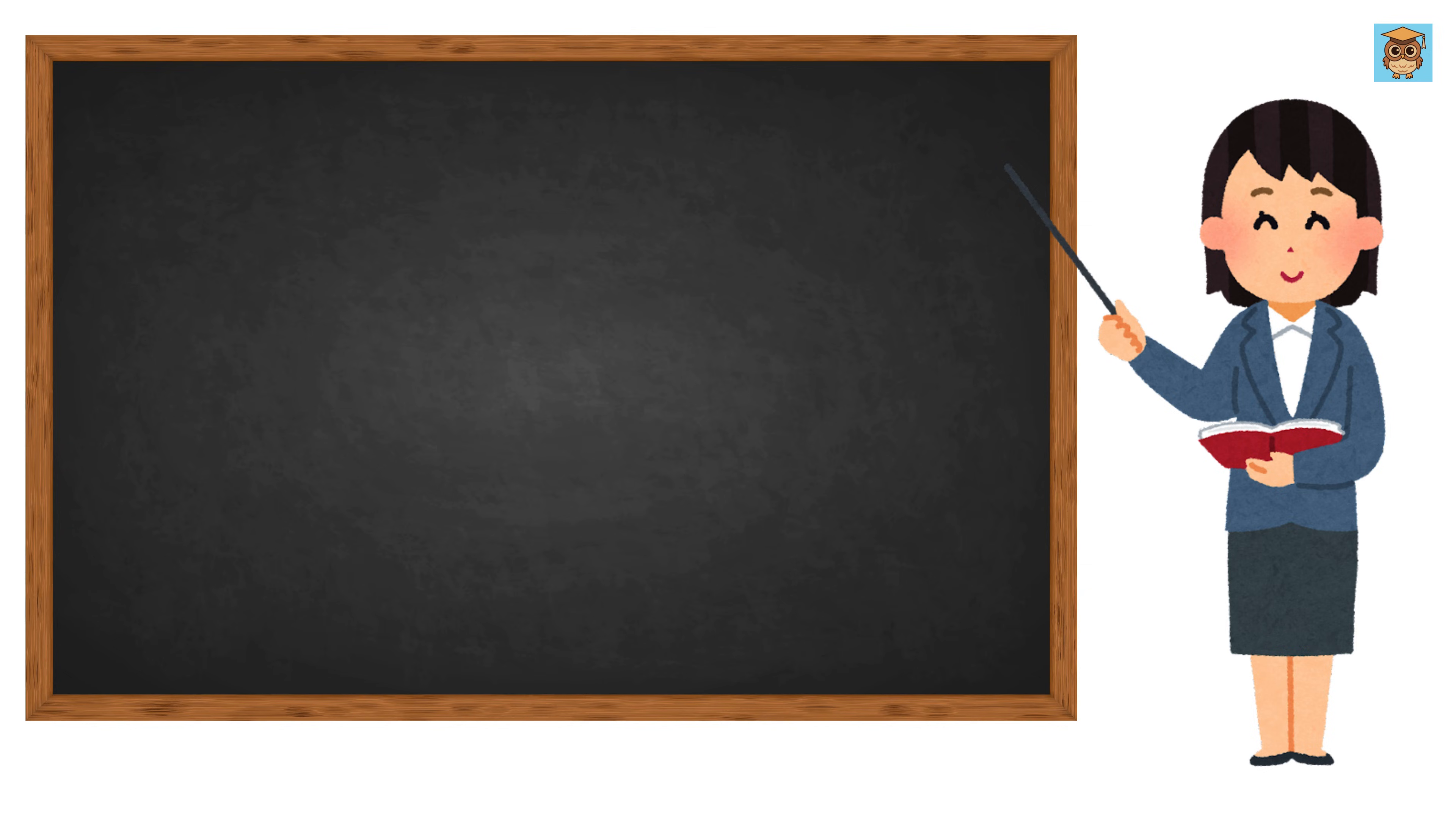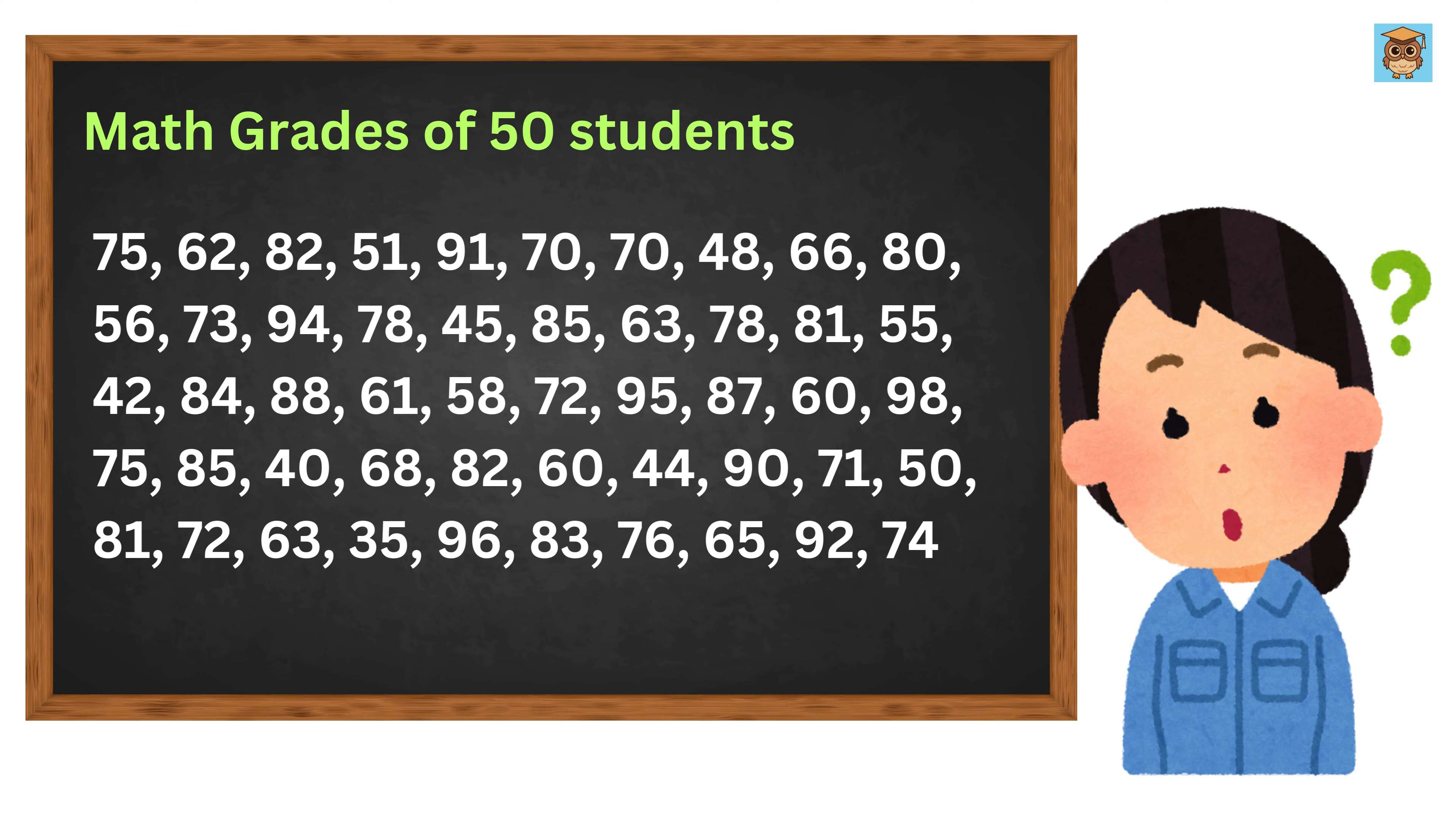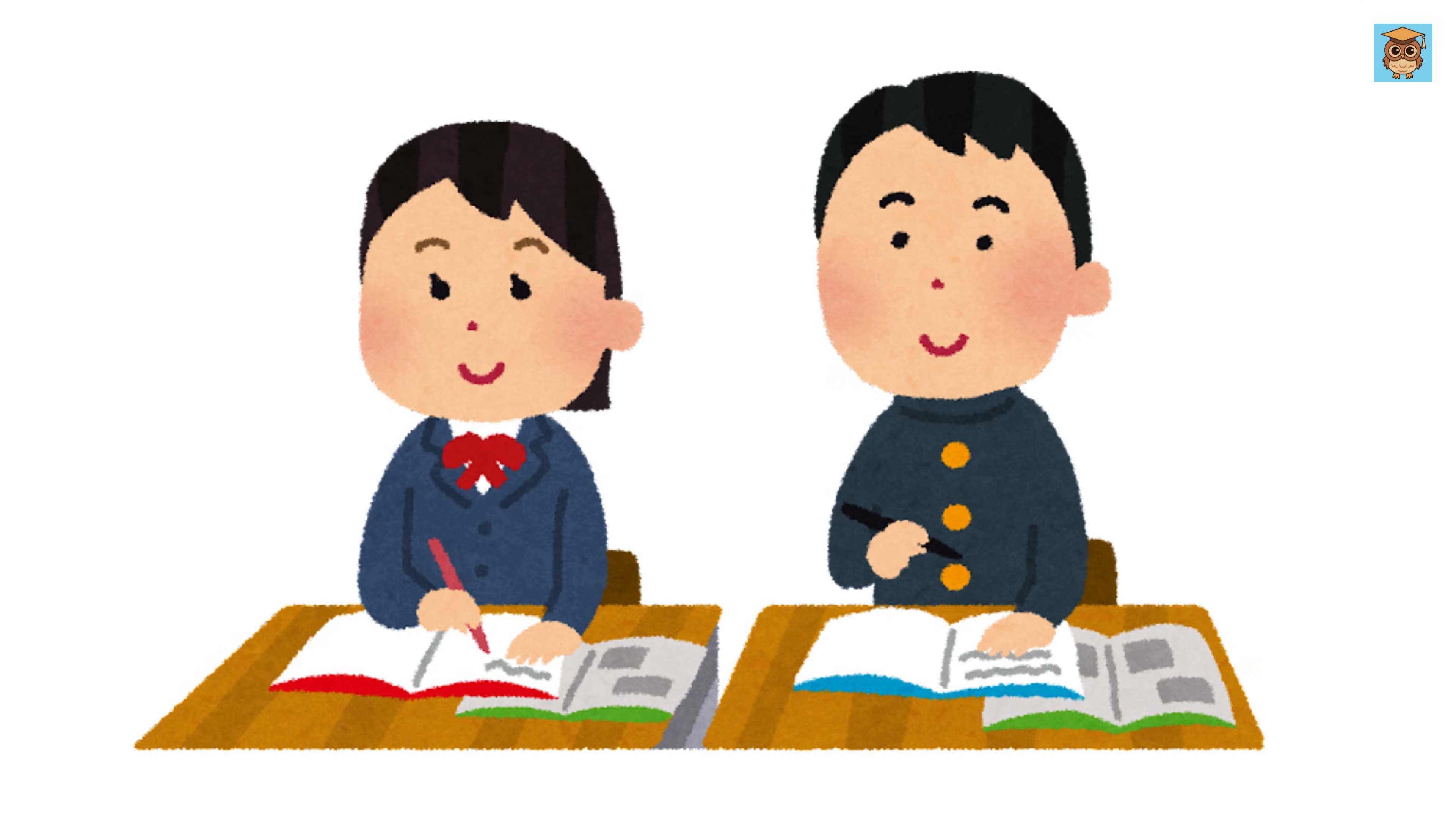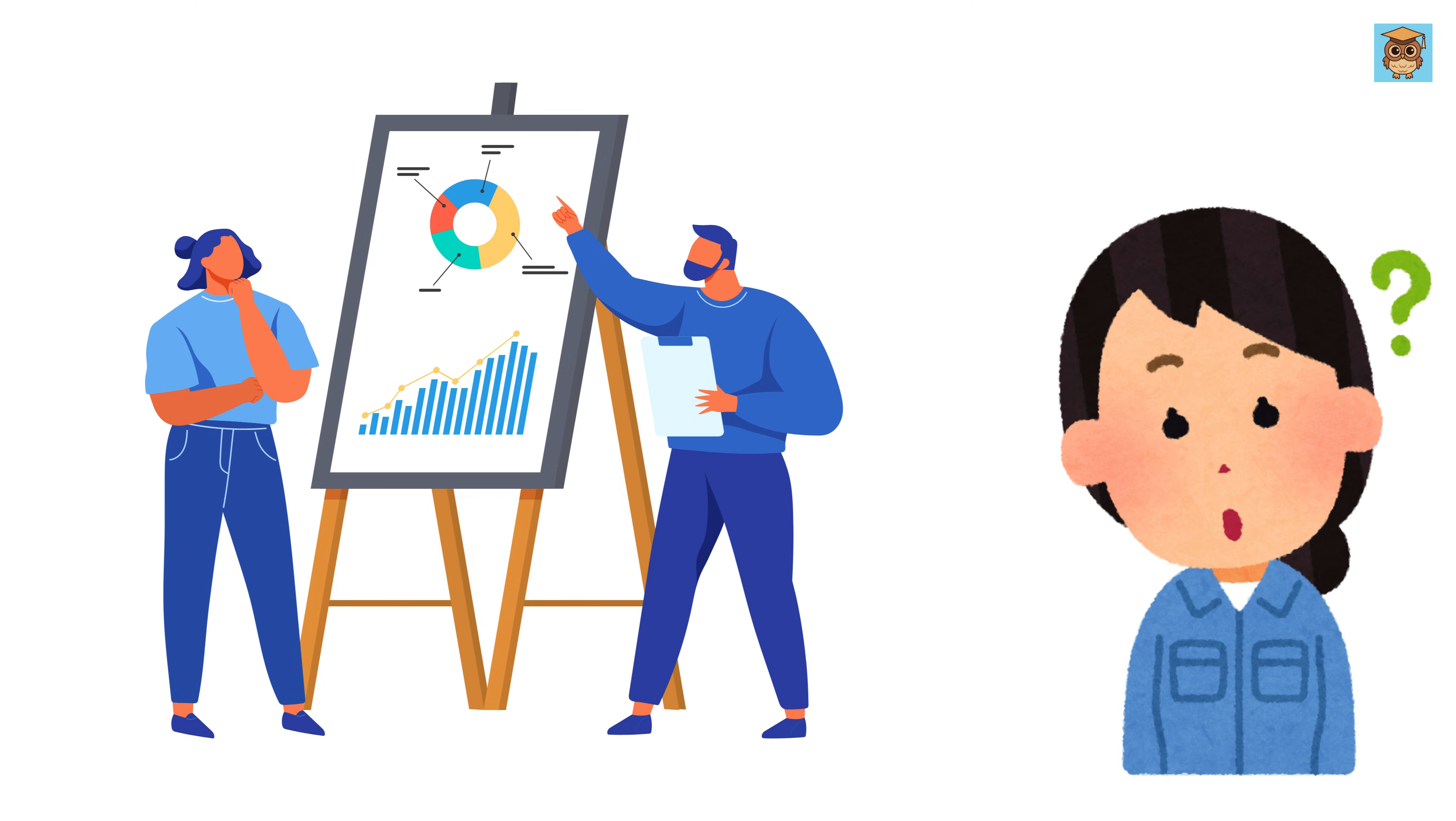Imagine you are a teacher in a class of 50 students. You just finished grading their math test, and now you have a list of 50 marks. But looking at a long list of numbers doesn't help much. You want to understand how the class performed - was the test easy, medium, or hard? Were most students around the same level? Are there a few students who scored extremely high or extremely low? To answer these questions, a branch of mathematics called statistics came into the picture.